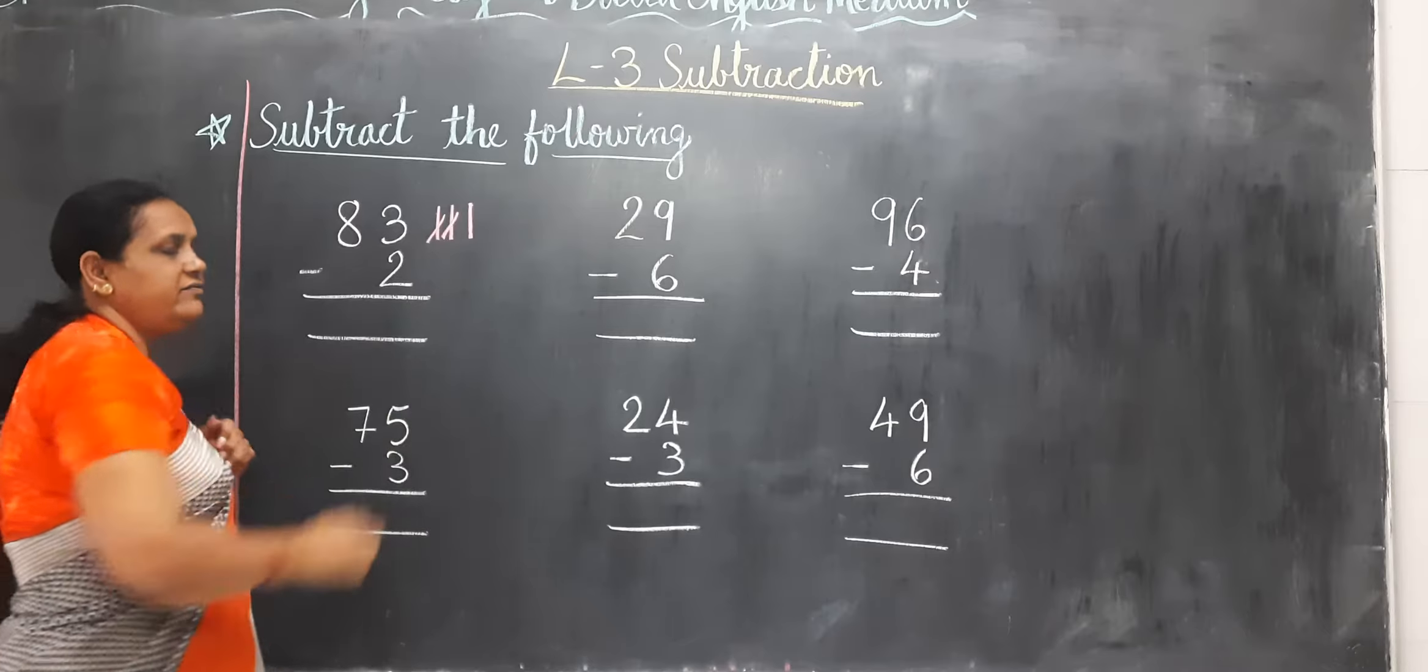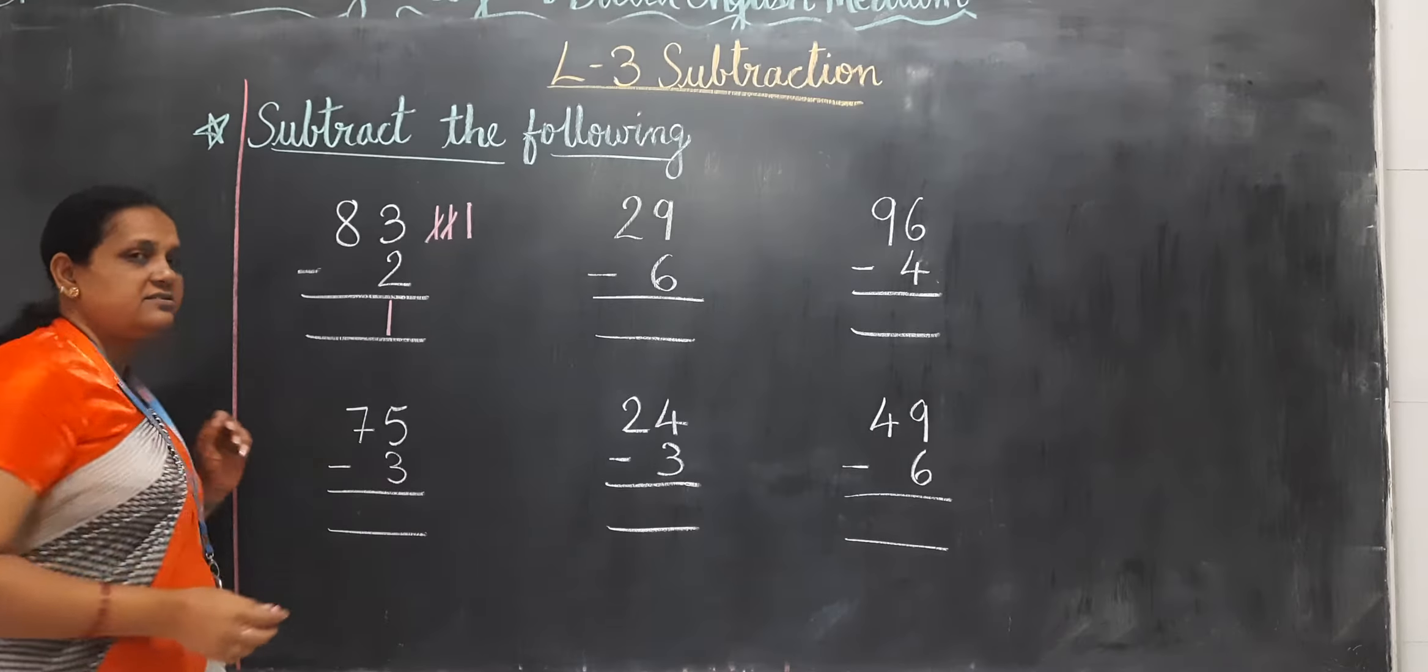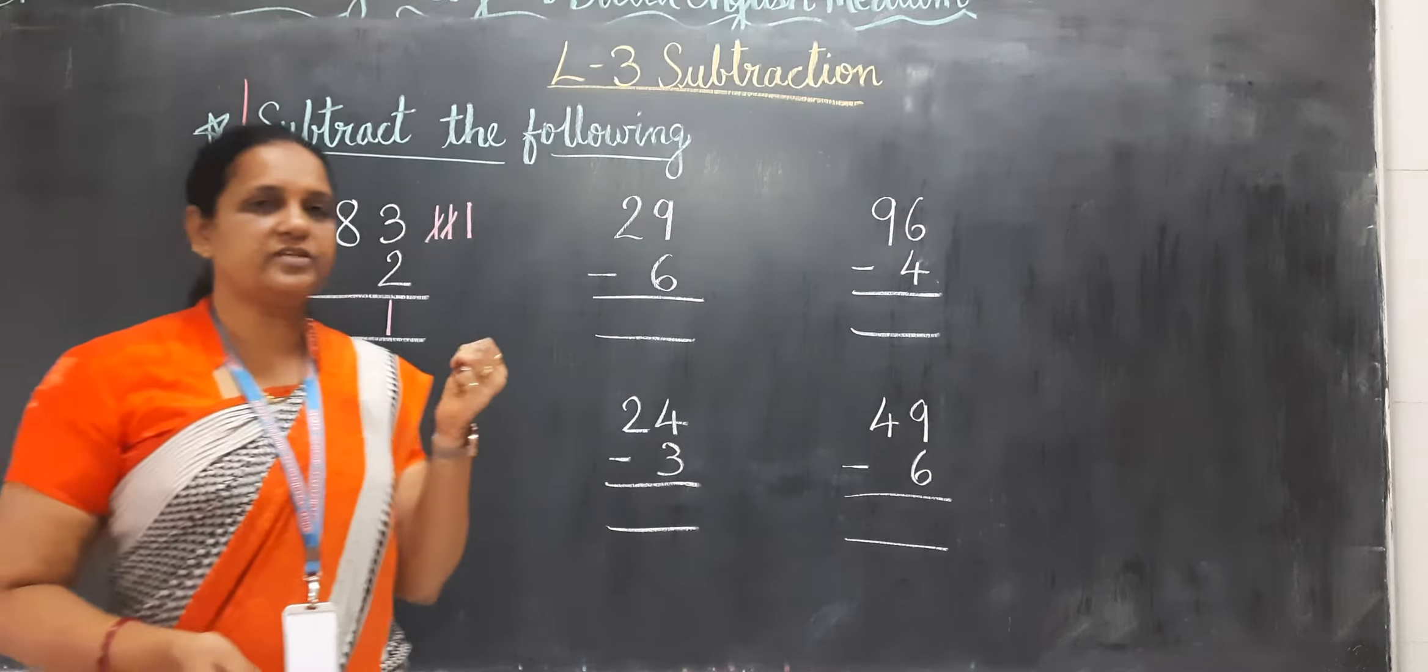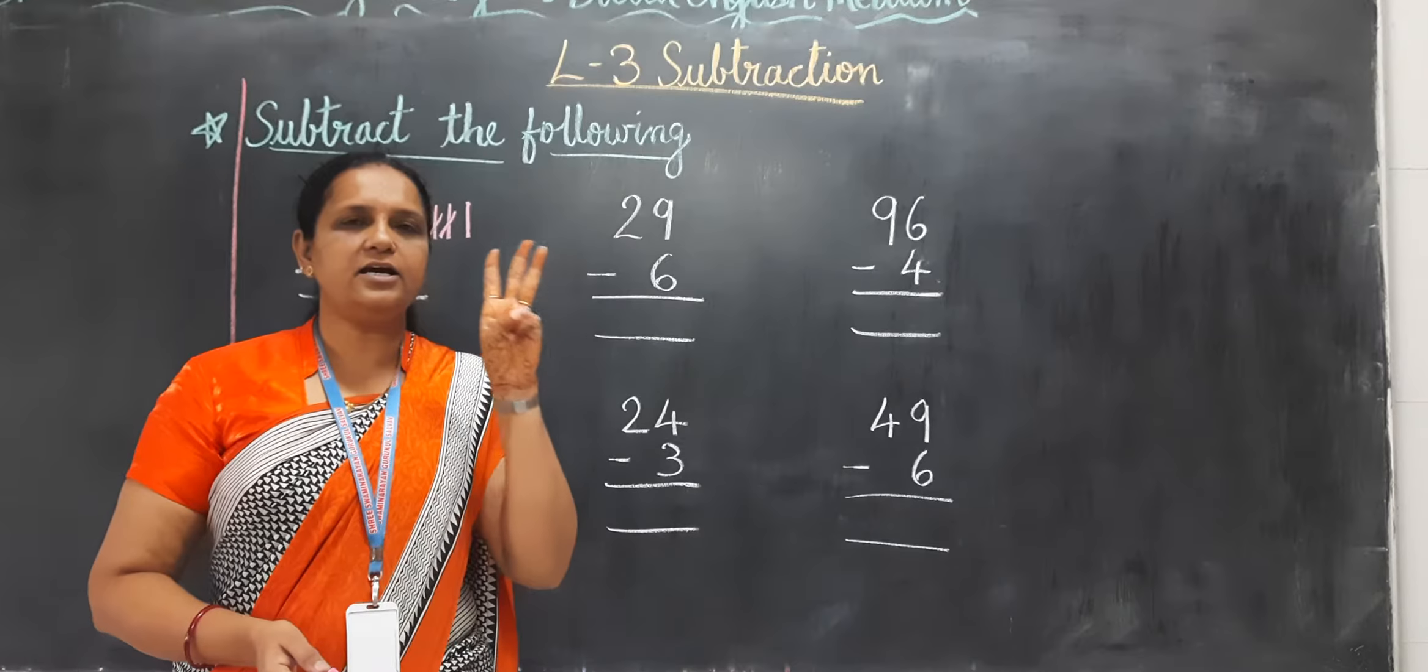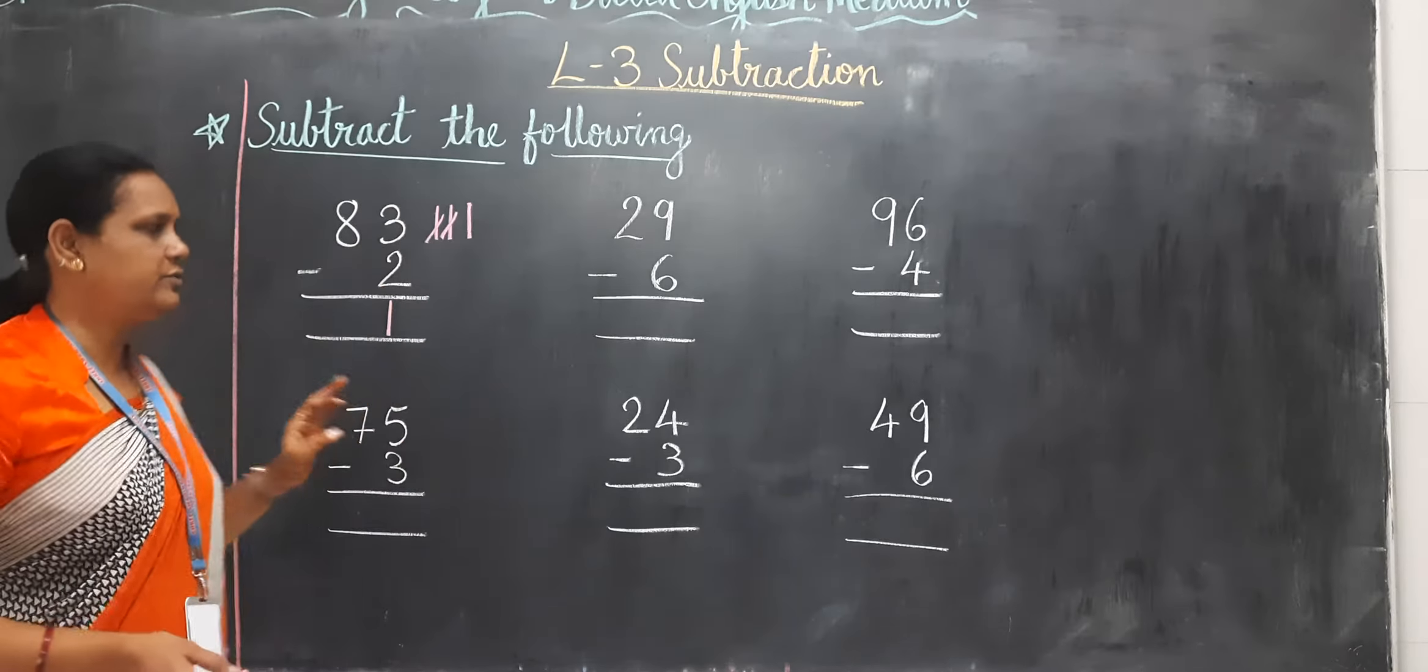Now how many lines remain? 1. Let's see with the finger also. Take 3 fingers and cut 2. 1, 2. Now how many fingers remain? 1.